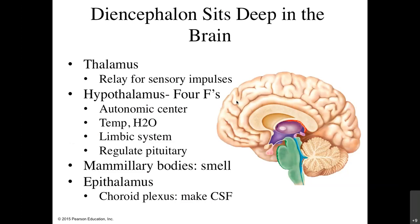The hypothalamus is your animal brain, responsible for the four F's: feeding, fleeing, fighting, and fornicating. It's also your autonomic center, regulating involuntary things like body temperature and water levels. Your limbic system — your emotional center — connects to the hypothalamus. The hypothalamus also regulates the pituitary gland and the hormones it secretes. Near the hypothalamus is the mammillary body, associated with smell, and the epithalamus, which contains the choroid plexus that produces cerebrospinal fluid.